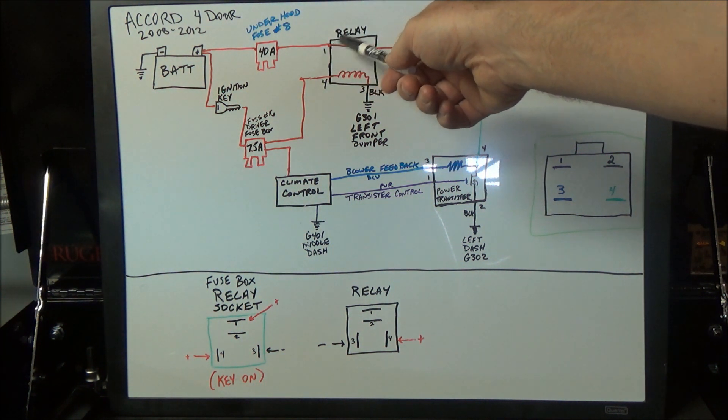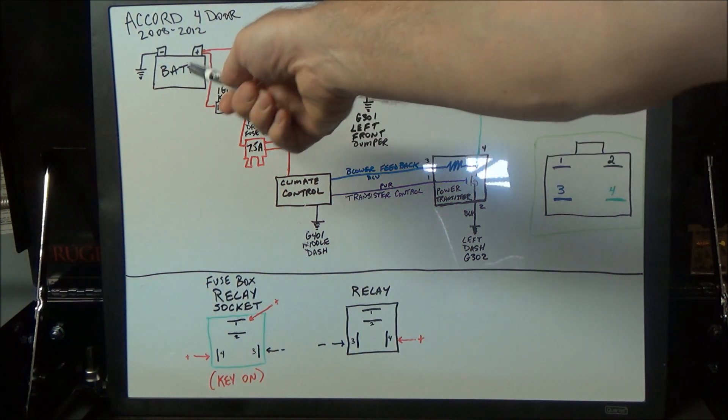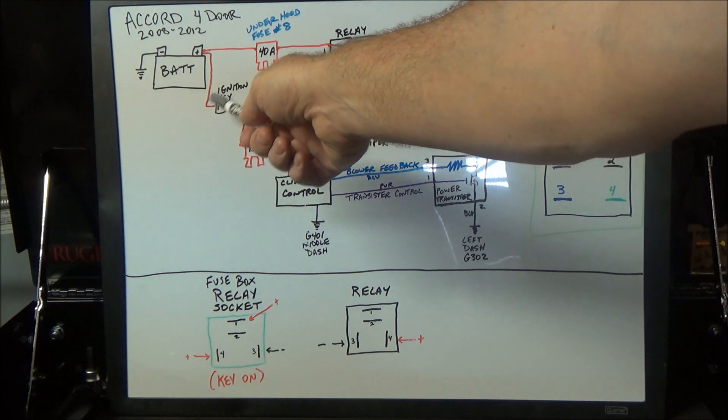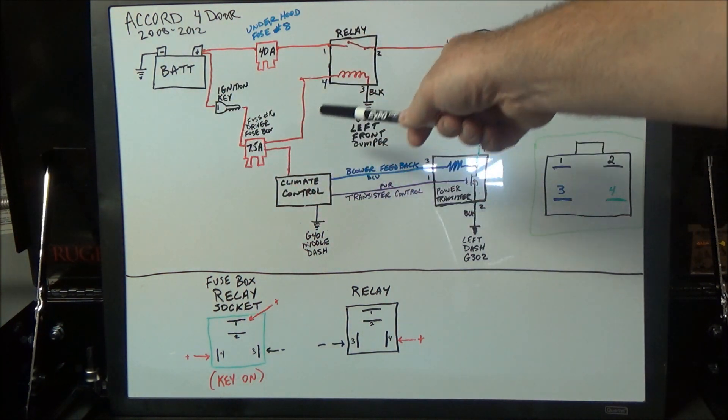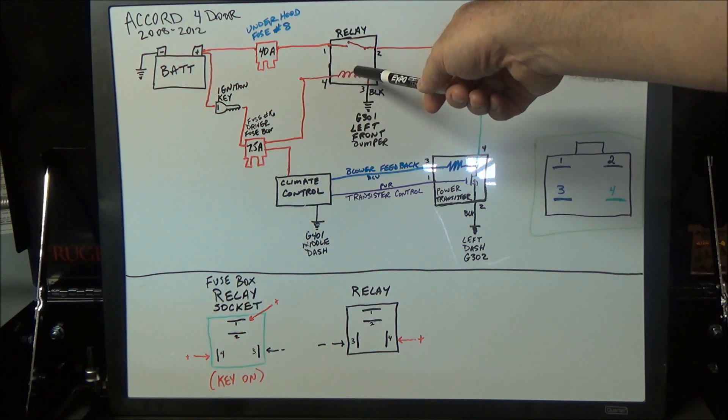You've got another leg that goes through your ignition switch and goes through a seven and a half amp fuse, then comes over to pin number four on this relay.